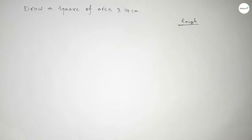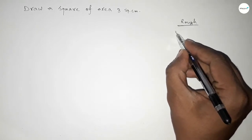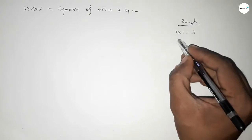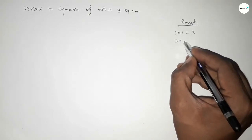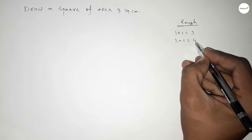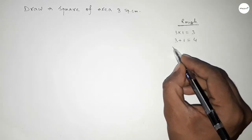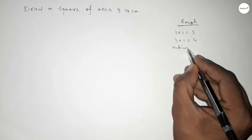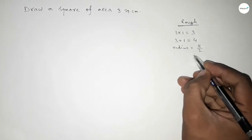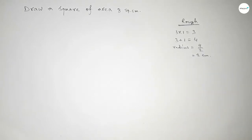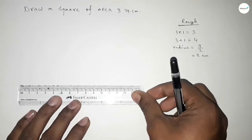We can write 3 as 3 into 1 equal to 3, then we write 3 plus 1 equal to 4. So we have to draw a semicircle with diameter 4 centimeters, so radius equals 4 by 2, which is 2 centimeters.